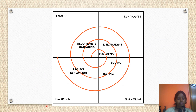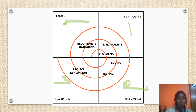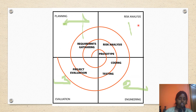This is the diagram of the spiral model. The entire spiral is divided into four parts — four quadrants. In the first quadrant, we have prototype and risk analysis. The second quadrant has coding and testing. The third quadrant has project evaluation. The fourth quadrant has requirements gathering. These are labeled as: first — risk analysis, second — engineering, third — evaluation, fourth — planning.